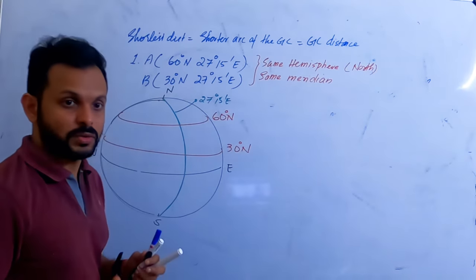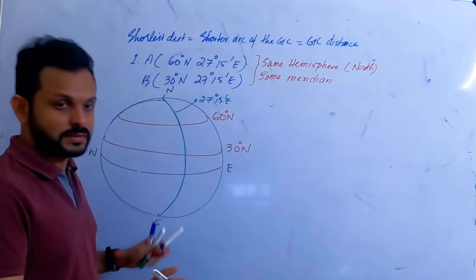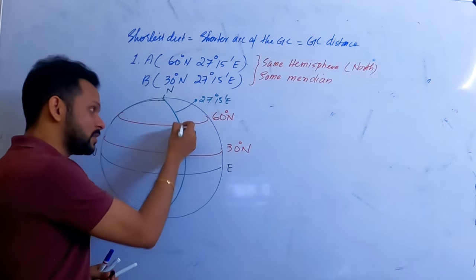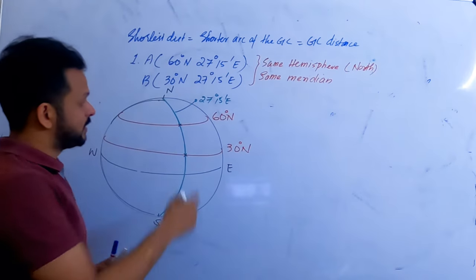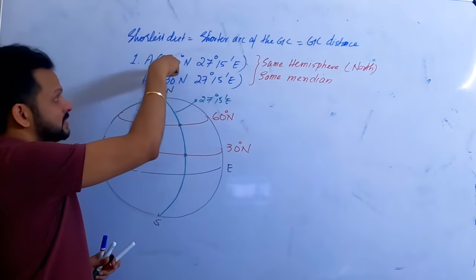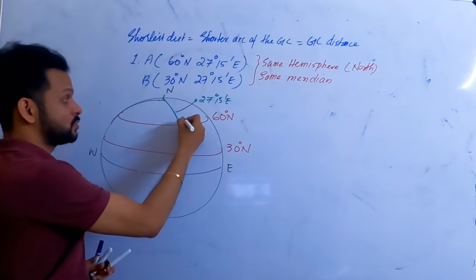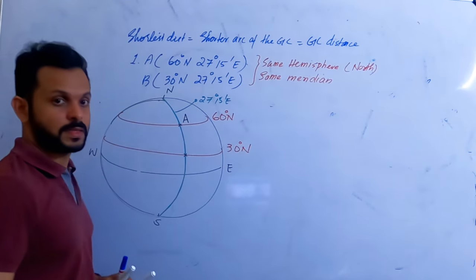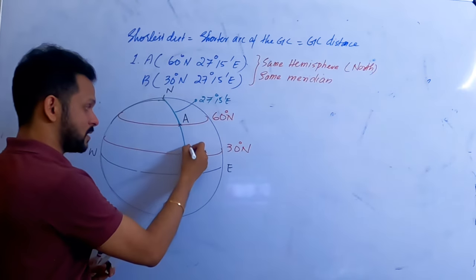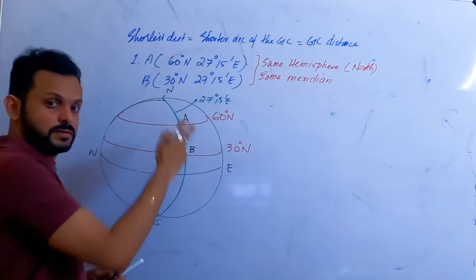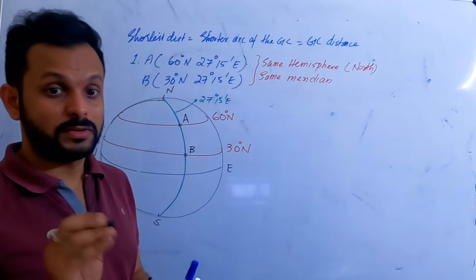One of the very common mistakes that students make is in marking the points — you know all those things — but you kind of mark the wrong points where the latitude and longitude intersect. The point where 60 degrees north intersects with 27 degrees 15 minutes east has to be A, and this has to be B. Do not interchange these. It might not change your magnitude, but it will change your direction.